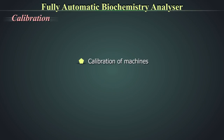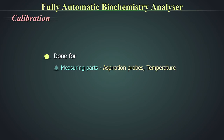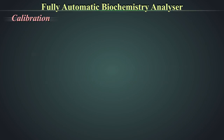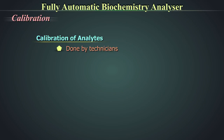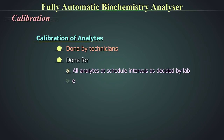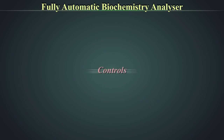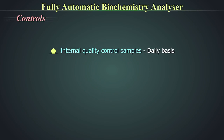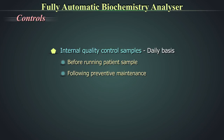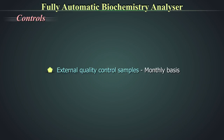Calibration of the machine is done by company engineers for measurable parts like aspiration probes, temperature, and optical parts like photodetectors and light source at regular intervals. Calibration of analytes is done by technicians for all analytes at scheduled intervals, during lot change, and post-maintenance or repair. Internal quality control samples are run on a daily basis before patient samples and following preventive maintenance or repair. External quality control samples are run usually on a monthly basis.